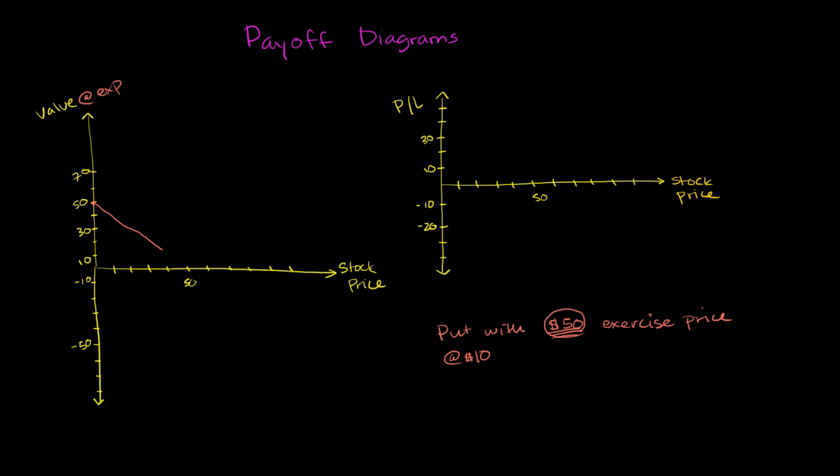All the way to if the stock becomes worth $50, then my put option, I wouldn't need to exercise it, because why would I? It's worthless to have the option to sell something at $50 where you can just sell the actual stock in the open market or buy the stock at $50. So then the put option becomes worthless for a stock price above that.